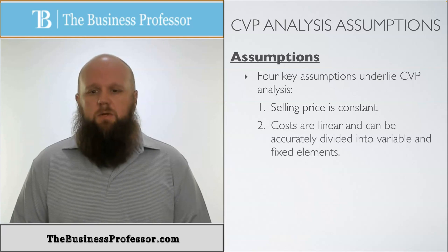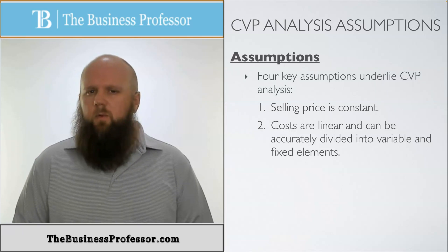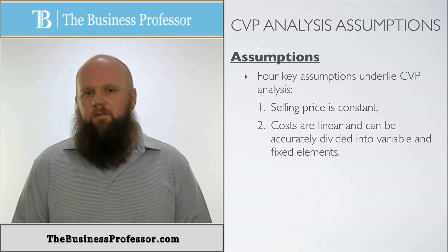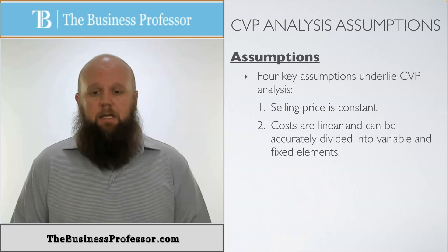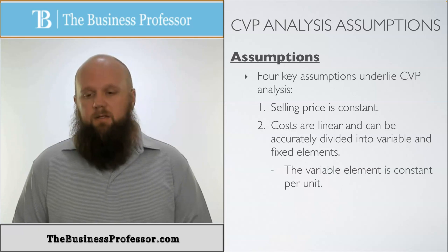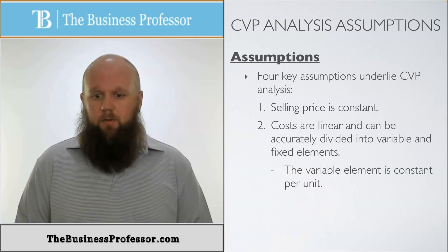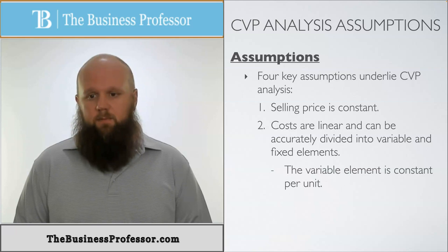The second assumption is that the costs are linear and can accurately be divided into variable and fixed elements. If you're thinking about a mixed cost, we want to be able to break that down into a variable and a fixed element, and we also look at them as linear. Variable elements are constant per unit, whereas the fixed element's total is the constant.